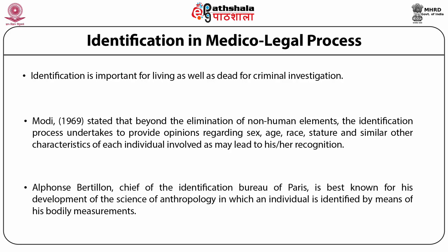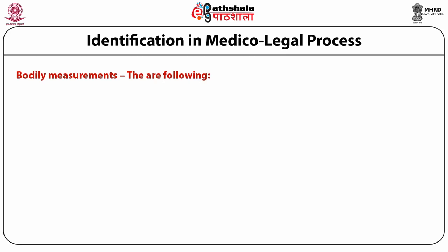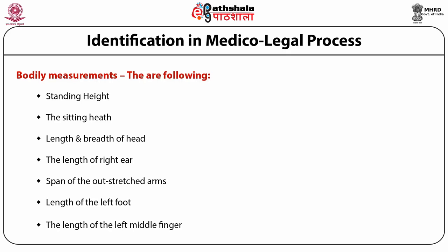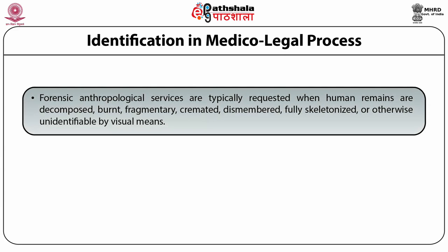Alphonse Bertillon, who was the chief of the Identification Bureau, is best known for the development of the science of anthropometry, in which an individual is identified by means of bodily measurements. These measurements include standing height, sitting height, length and breadth of head, length of right ear, span of the outstretched arm, length of the left foot, and length of the left middle finger. Forensic anthropological services are typically requested when human remains are decomposed, burnt, fragmentary, cremated, or dismembered.